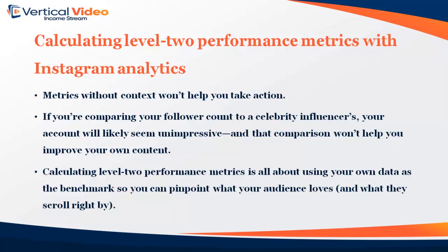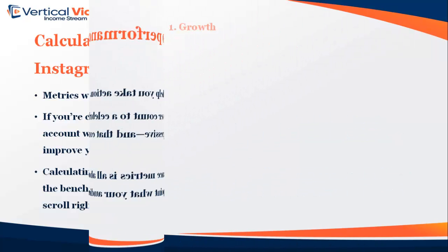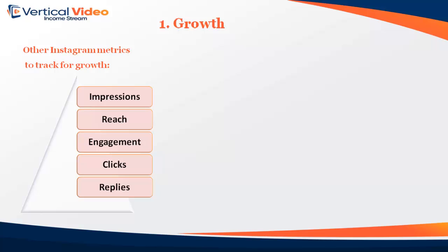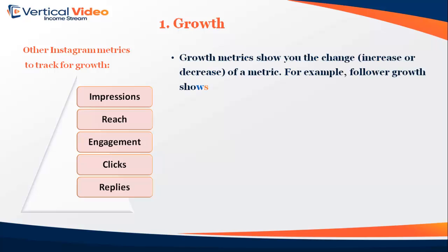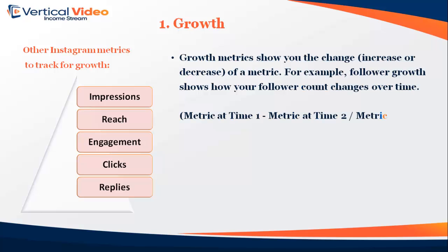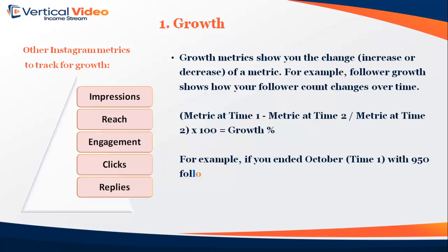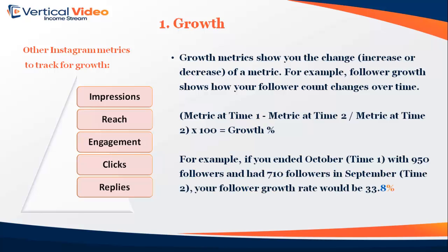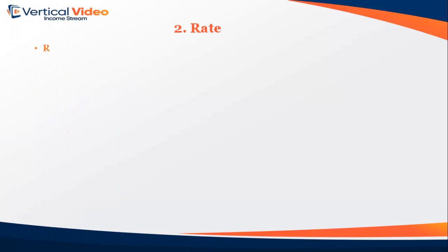One: Growth. Other Instagram metrics to track for growth include impressions, reach, engagement, clicks, and replies. Growth metrics show you the change — increase or decrease — of a metric over time. For example, follower growth shows how your follower count changes. Formula: (Metric at Time 1 − Metric at Time 2) ÷ Metric at Time 2 × 100 = Growth Percent. For example, if you ended October (Time 1) with 950 followers and had 710 followers in September (Time 2), your follower growth rate would be 33.8%.